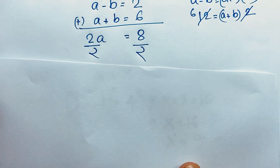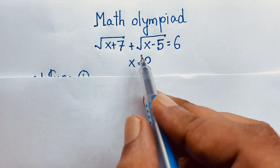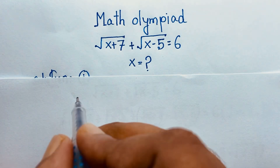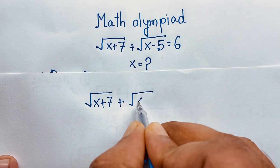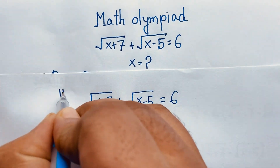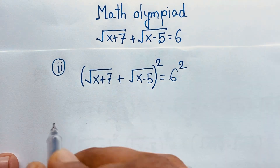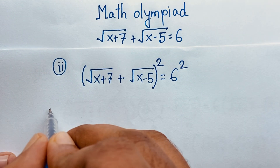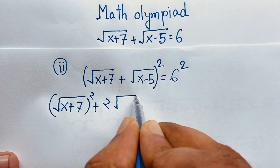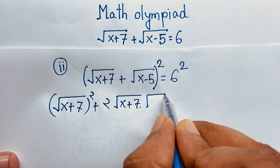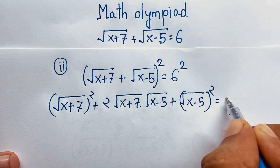Now I solve this question using another method. Our question is: √(x+7) + √(x−5) = 6 — Method 2. I square both sides. Using the formula (a+b)² = a² + 2ab + b², it will be [√(x+7)]² plus 2 times √(x+7) times √(x−5) plus [√(x−5)]² equals 36.